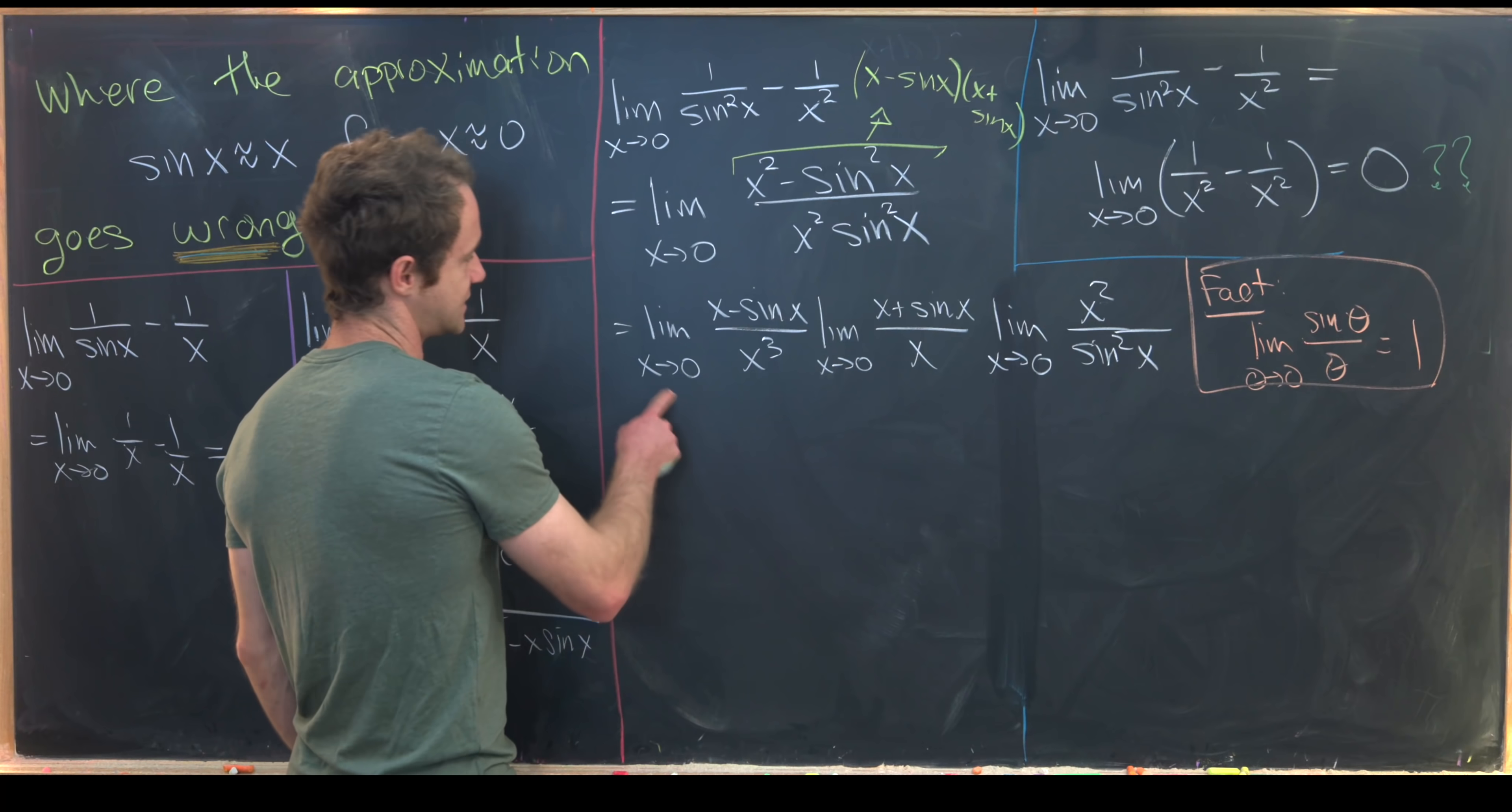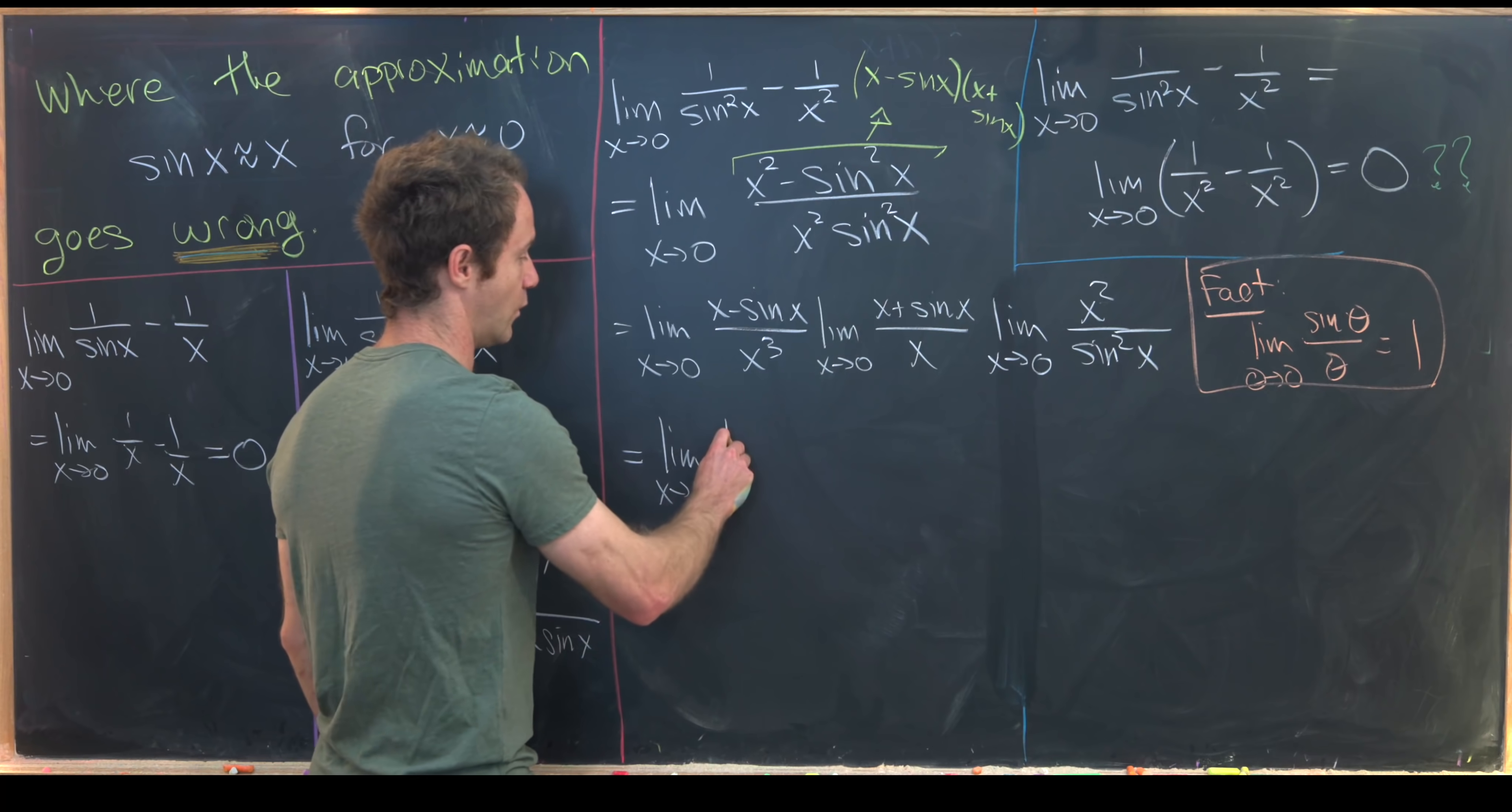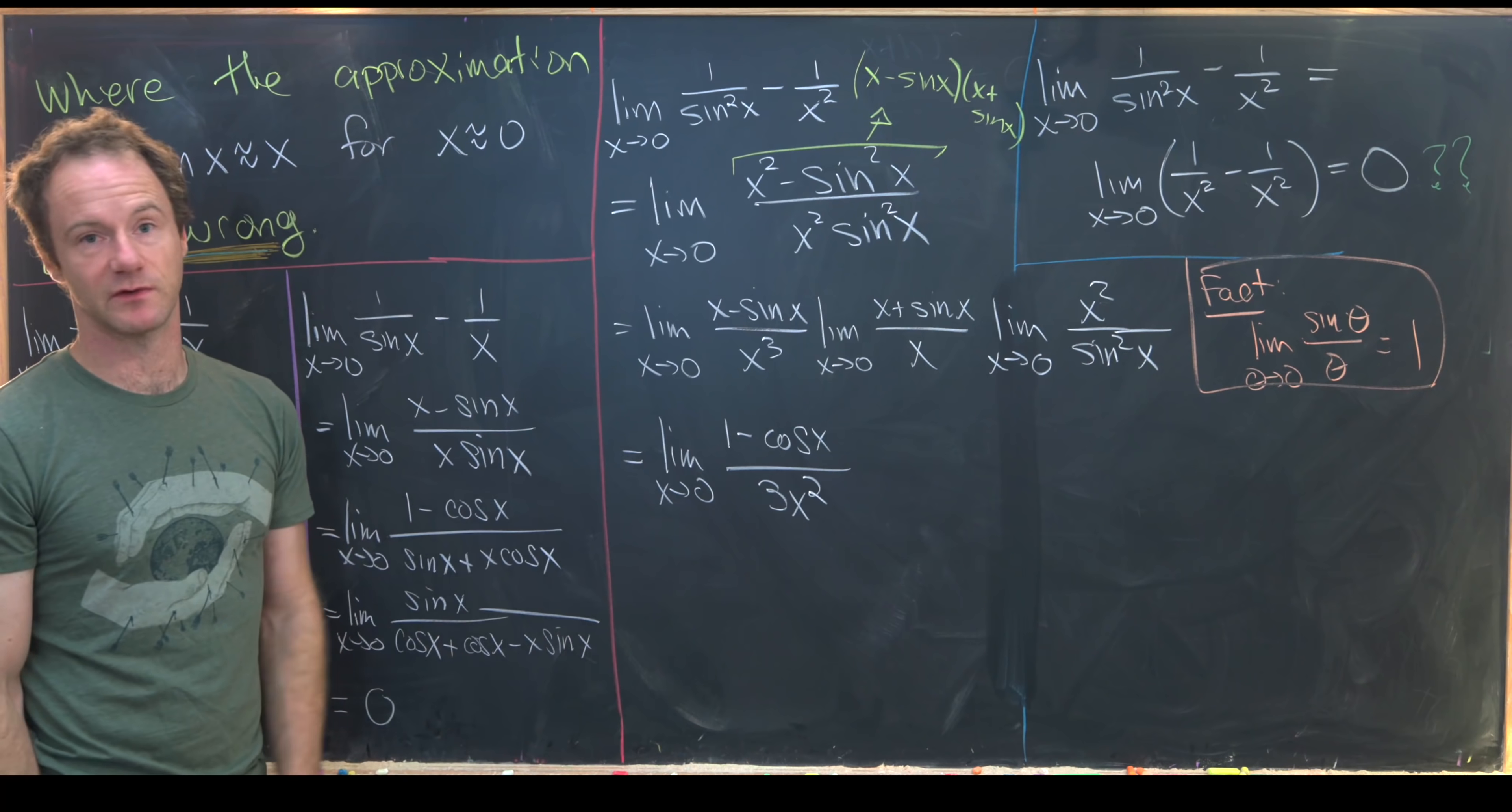So let's notice that this guy is an indeterminate form. We can use L'Hopital's rule. That's going to give us this limit as x goes to zero of one minus cosine of x over three x squared. That's our first step of L'Hopital's rule.